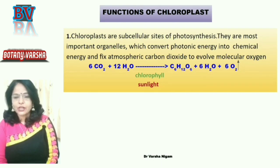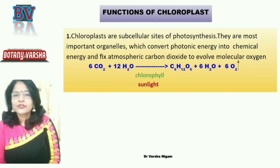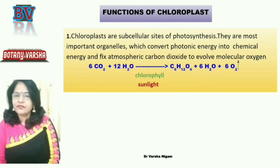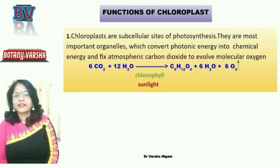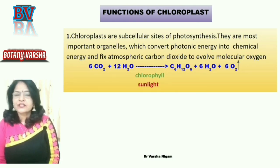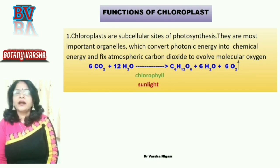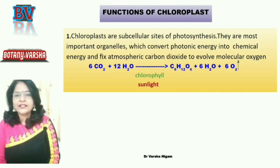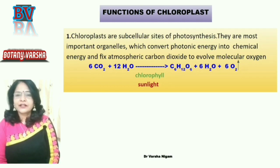Chloroplasts are subcellular sites of photosynthesis. Photosynthesis takes place inside the chloroplast — it is the site of photosynthesis. They are the most important organelles which convert photonic energy into chemical energy. In the process of photosynthesis, simple inorganic compounds like carbon dioxide and water react with each other in the presence of sunlight and chlorophyll, and produce carbohydrate and release oxygen.